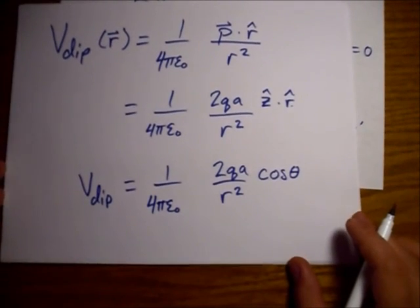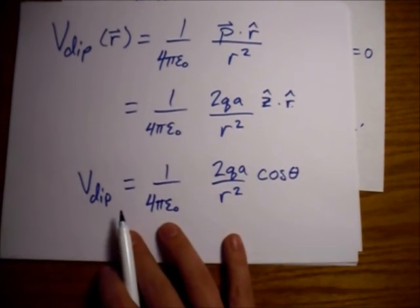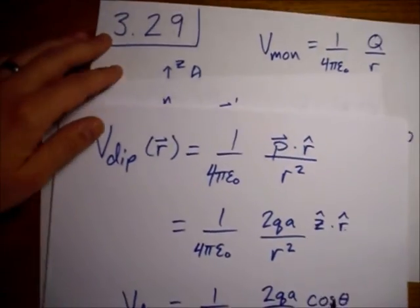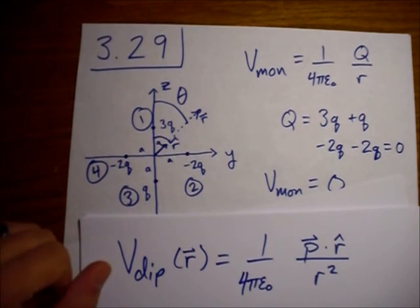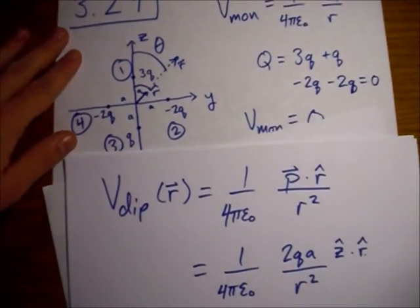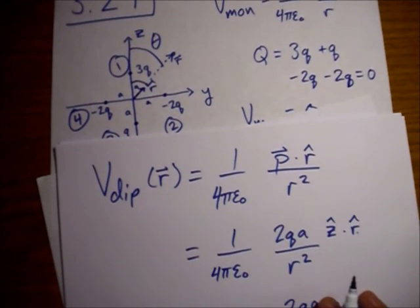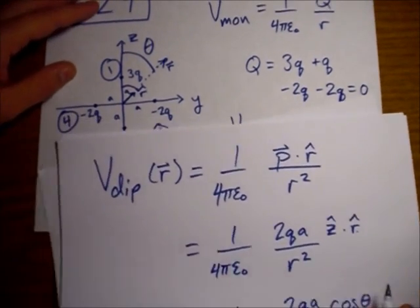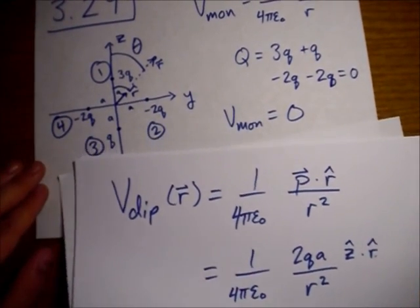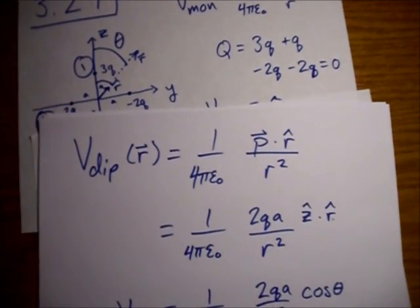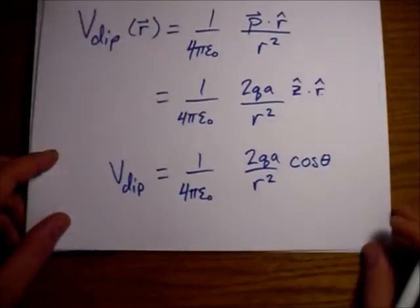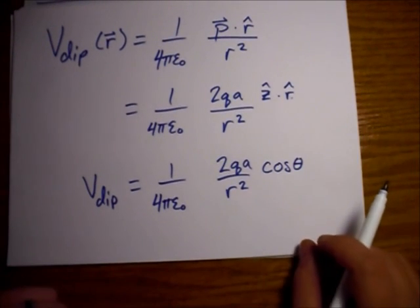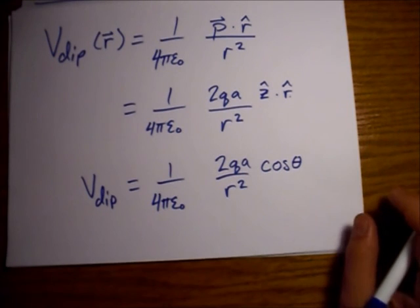So, this is an approximate equation for the potential for points far away from the origin. Alright. If we wanted to get all crazy about it, we could try calculating the quadrupole moment. But we just wanted the first term. So, here we go.